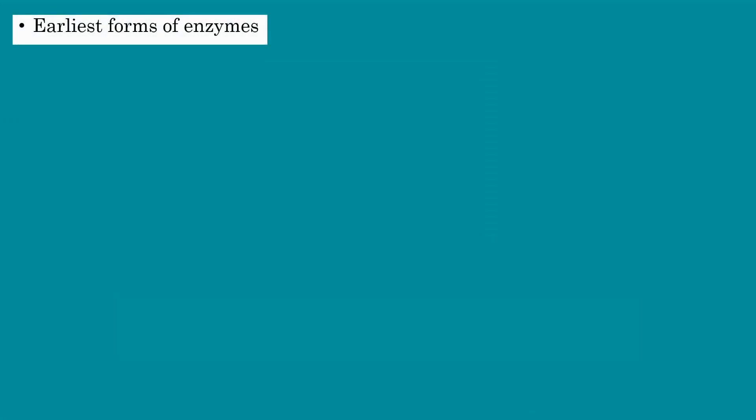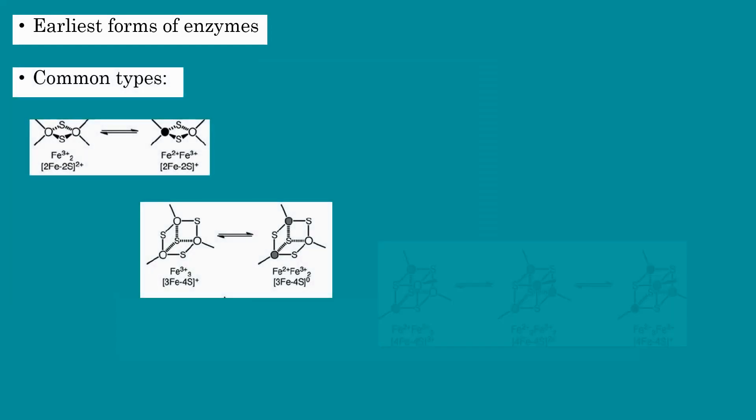Iron-sulfur clusters are thought to be one of the earliest forms of enzymes. The common types of biological iron-sulfur clusters are 2-iron-2-sulfur, 3-iron-4-sulfur, and 4-iron-4-sulfur.